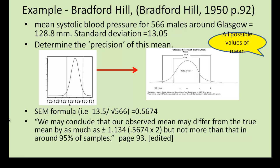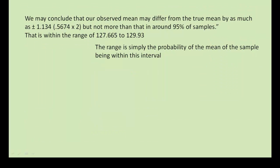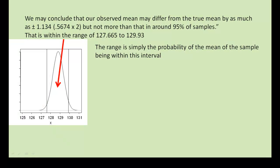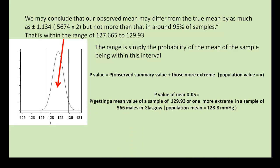Obviously we are assuming that the sample was typical, but how much more useful this is than four in-depth qualitative interviews which someone might come up with. Here we have information that allows us to make rational policy decisions. So how does a range, which some of you will notice is actually what is called the confidence interval of the mean, and in this sense it's around about the 95% mark, have to do with a p-value? Well, the range we've calculated is simply the probability of the mean of the sample being within this middle interval, whereas the p-value is basically the excluded bits of the tails. That is, the p-value of roughly 0.05 is equal to the probability of getting a mean value of 129.93 or one more extreme in a sample of 566 males in Glasgow given that the population mean is 128.8.